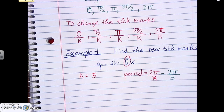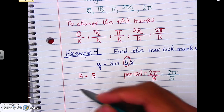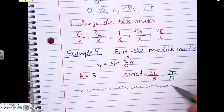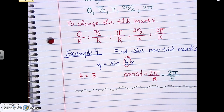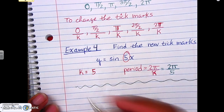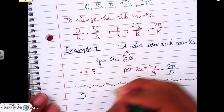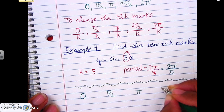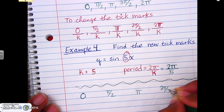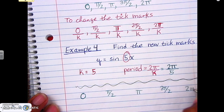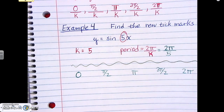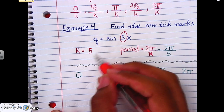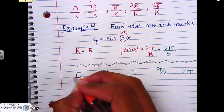Now we also have to find our new tick marks. For each one of the original tick marks — 0, π/2, π, 3π/2, and 2π — we divide each one by k, which is 5.